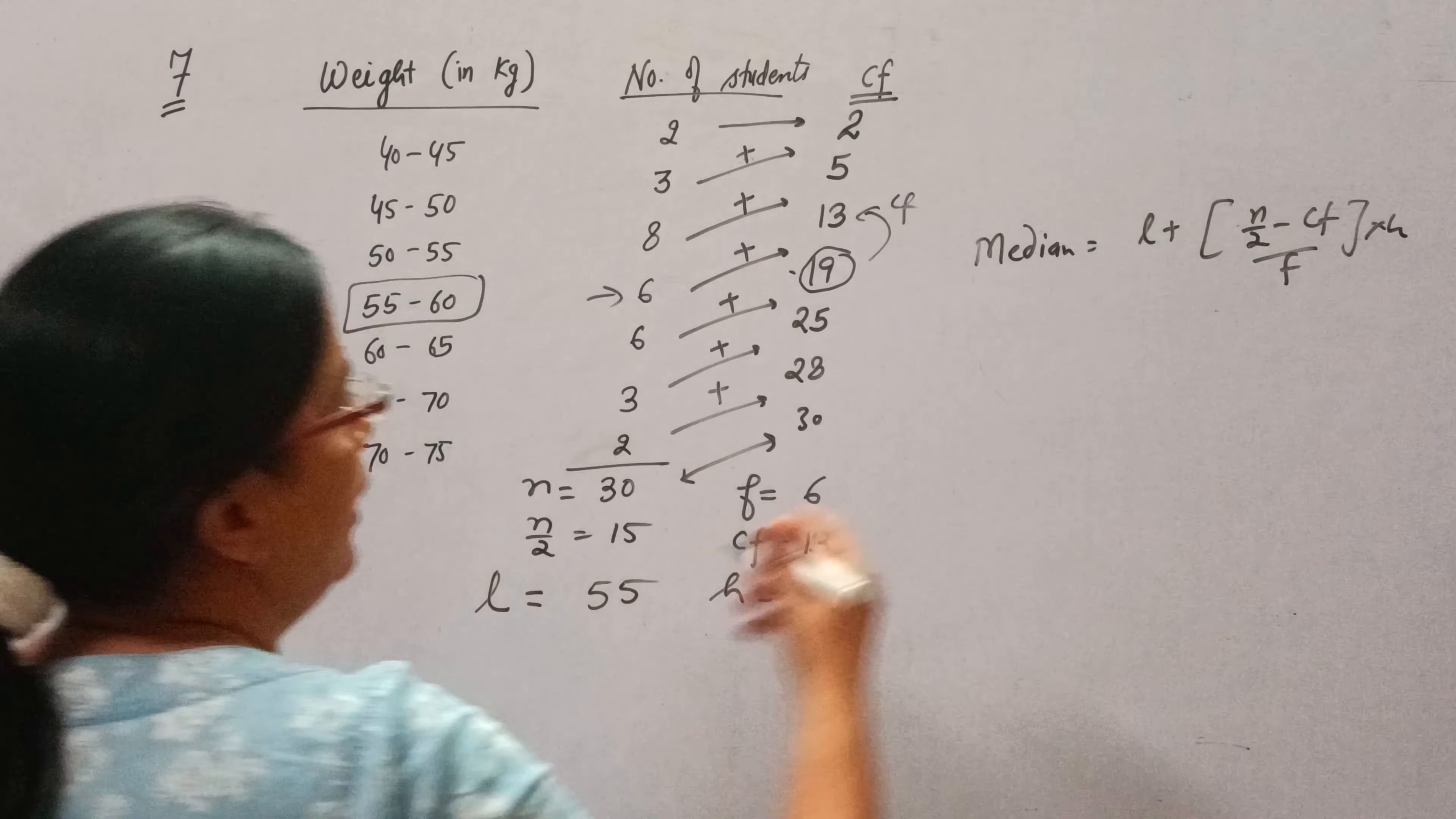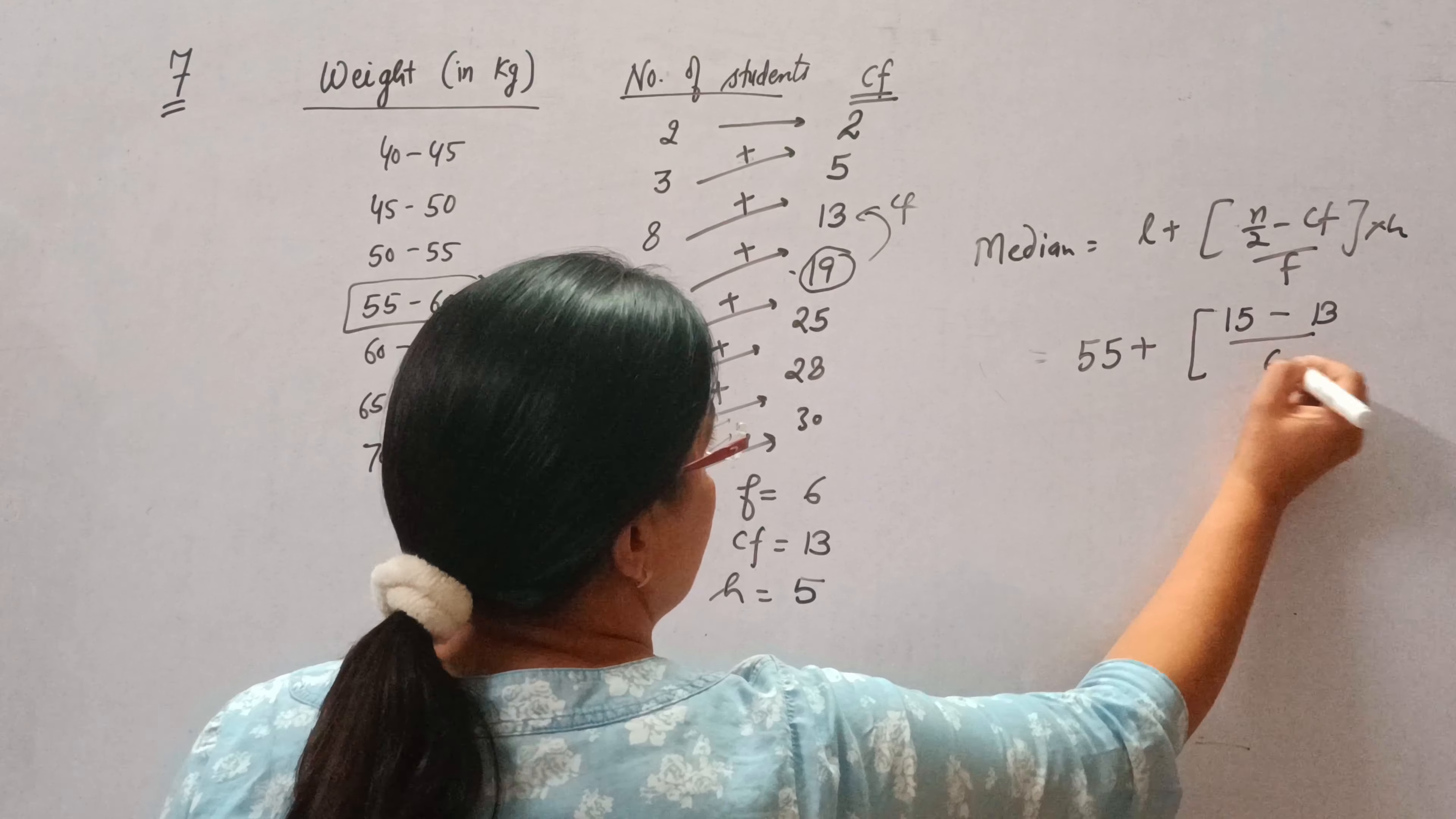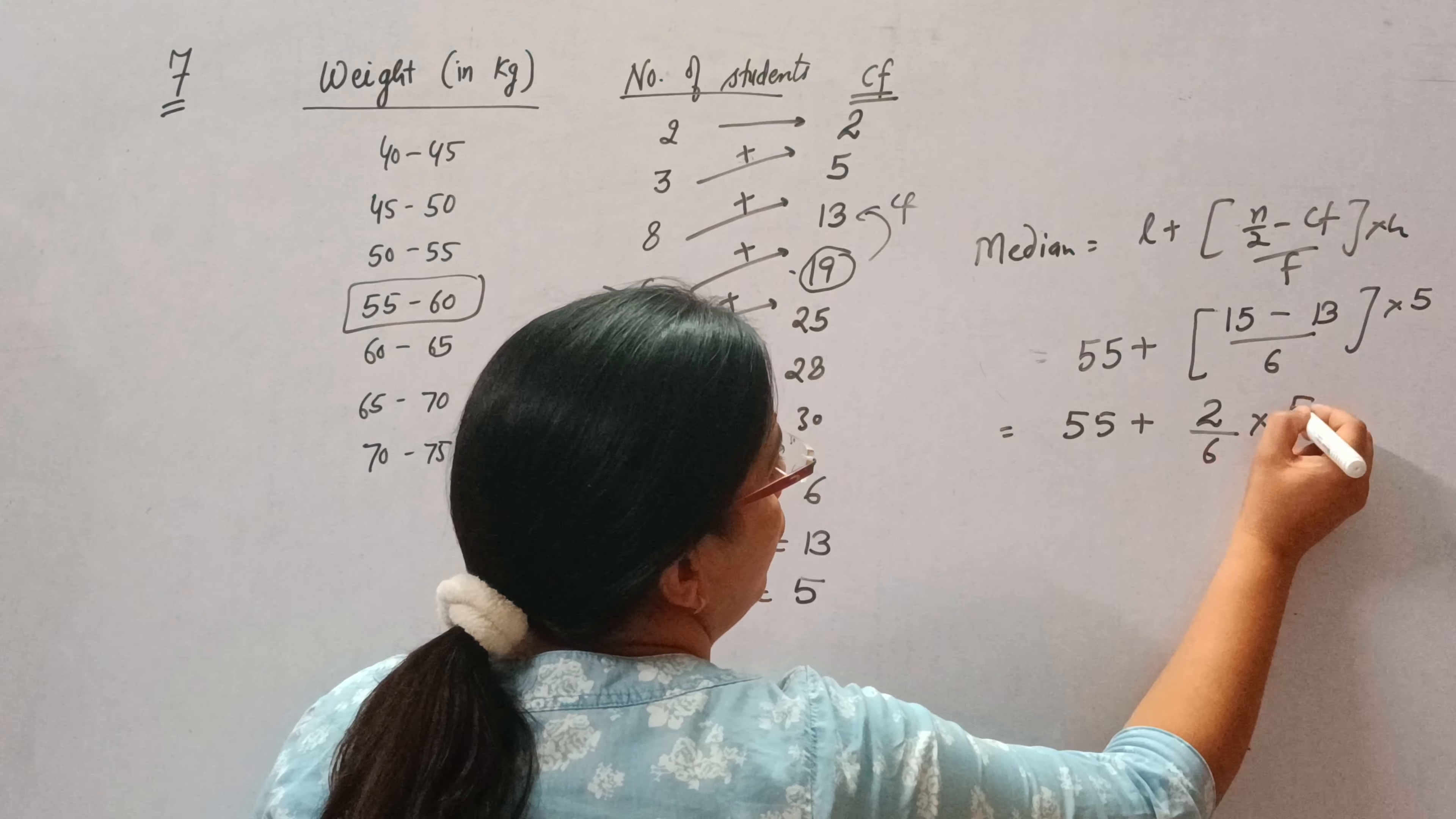What is L? L is 55. n by 2 is 15. CF is 13. F is 6 and H is 5. 55 plus, 15 minus 13 is 2, upon 6 into 5.